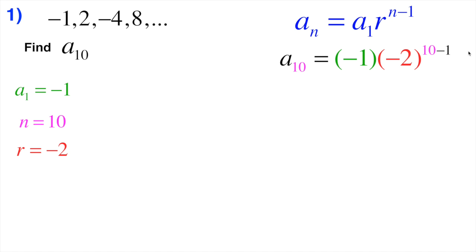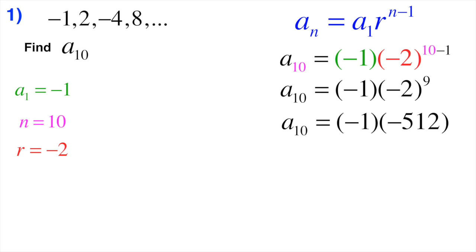So 10 minus 1 gives us the exponent of 9. We have to deal with the exponent first: negative 2 to the 9th power is negative 512. So now we have negative 1 times negative 512, which gives us 512. The 10th term in this sequence is 512.